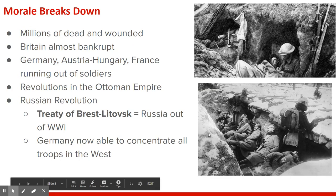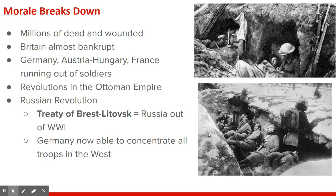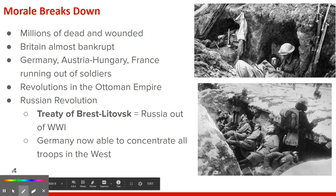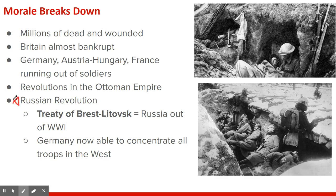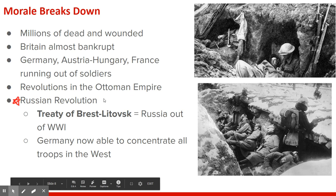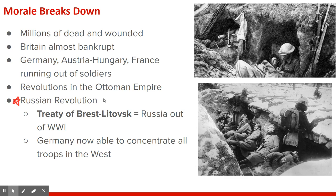As World War I began to spiral into two and three years of warfare, morale began to break down in many countries because of how vicious the war really was. Britain was almost bankrupt, along with most of Europe's nations. They were sending 14- and 15-year-old boys to the front in Austria, France, and Germany because they were just running out of soldiers, and there were revolutions all across the Ottoman and Austro-Hungarian empires. One of the biggest changes was the Russian Revolution — the Russians signed a treaty exiting World War I, switched from their monarchy to a socialist Soviet government, gave up territory to Germany and Austria, allowing Germany and Austria to transfer all their eastern troops to the western front to focus on Britain and France.